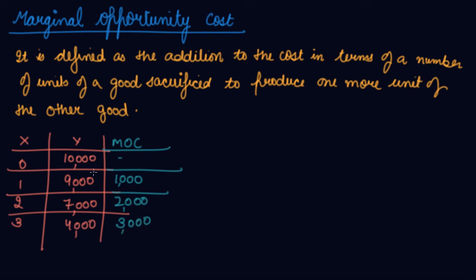From one, how much you have to sacrifice of Y for one extra production of X is your opportunity cost. It means the cost of your next best alternative. You are choosing nine thousand in place of ten thousand. Here you are choosing seven thousand in place of nine thousand, that is two units of X. This is your marginal opportunity cost.